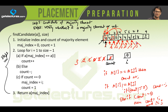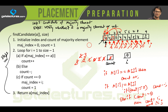Incrementing j again: value 3 is not equal to 4, and count is not 0, so we decrement count to 2. Incrementing j: value 4 equals a[i], so count becomes 3. Incrementing j again: value 2 is not equal to 4, so count becomes 2.